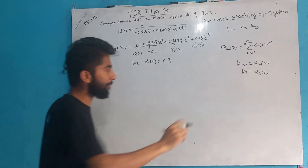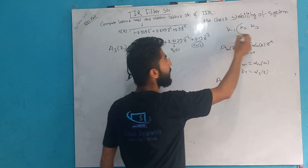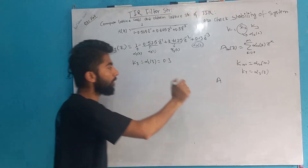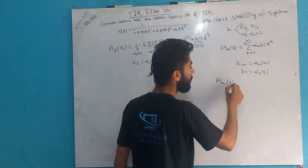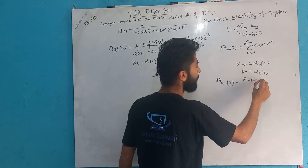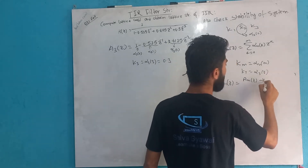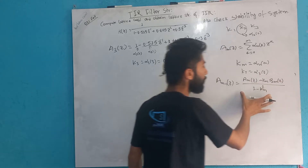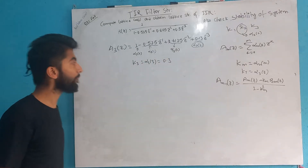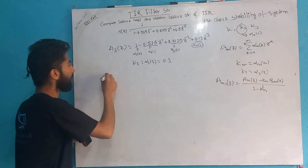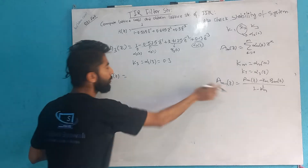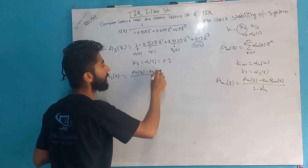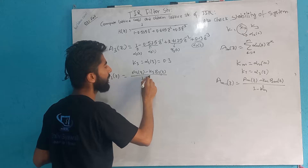We use this formula: A(m-1)(z) equals A_m(z) minus K_m · B_m(z), all divided by 1 minus K²_m. So A2(z) equals A3(z) minus K3 · B3(z), divided by 1 minus K3 squared.